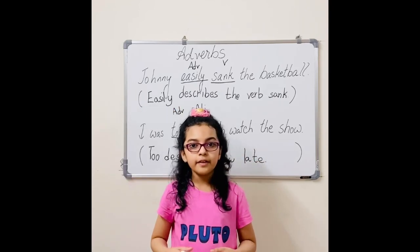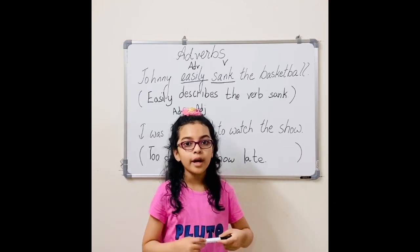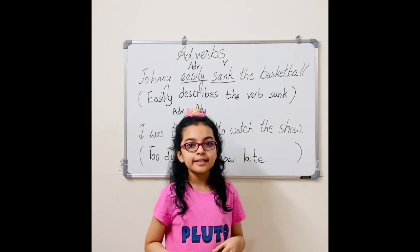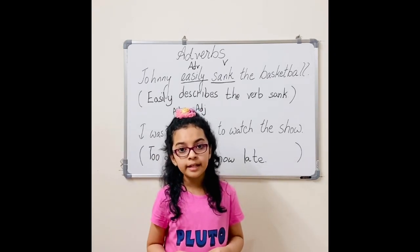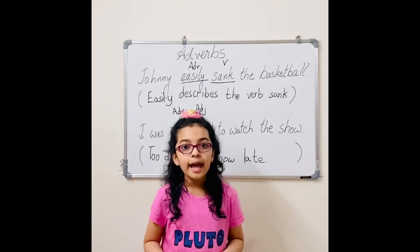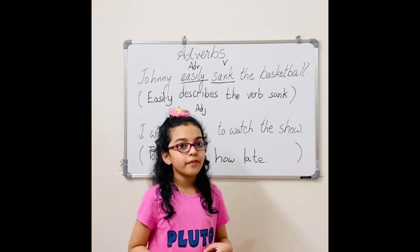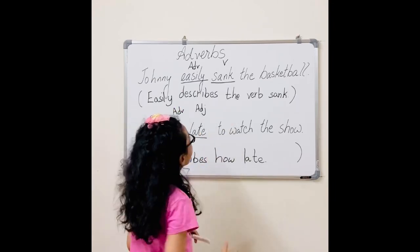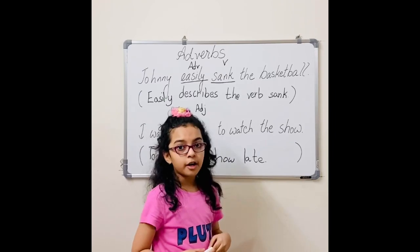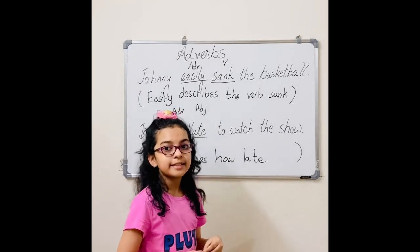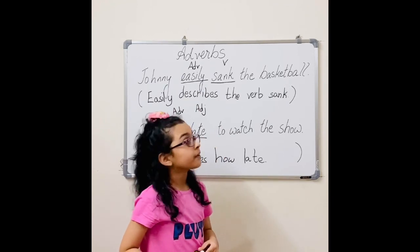Here's a tip: if you can't identify where the adverb is, ask yourself these questions — when did it happen, where did it happen, how did it happen, and how much? So in the first example, if I don't know where the adverb is, I'll ask myself: how did Johnny sink the ball? He sank it easily. So now I know the adverb is easily.